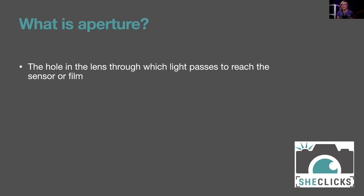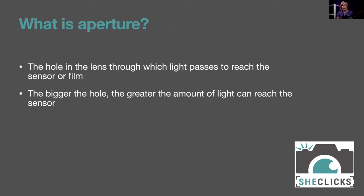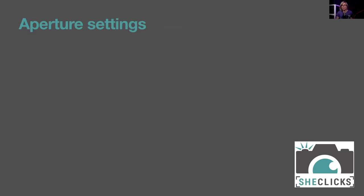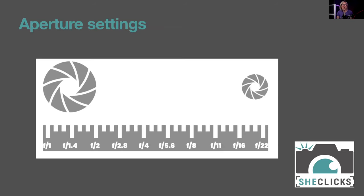Aperture is the hole in the lens through which light passes to reach the sensor or film. The bigger the hole, the greater the amount of light. The aperture settings look a little odd because they represent a fraction and ratio that allows comparison between different lenses — so a 200mm lens and a 50mm lens set to f/8 both let the same amount of light through. The 'f' stands for focal length in millimeters divided by the diameter of the aperture.